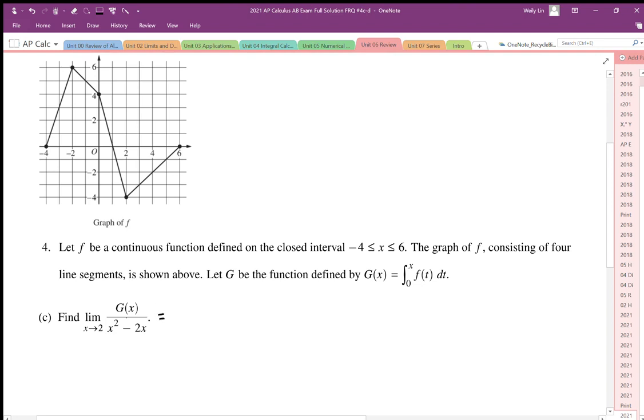So when we substitute in x equals 2, in the denominator we get 2 squared minus 4, which is 0. And then we have to work out the value of g of 2. So g of 2 is going to be defined by the area under the curve from 0 to 2 under the f function.